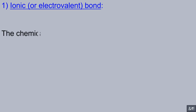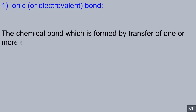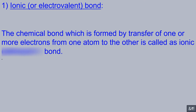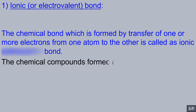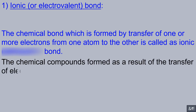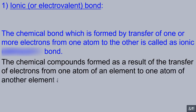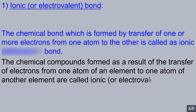The chemical bond which is formed by transfer of one or more electrons from one atom to the other is called an ionic bond. The chemical compounds formed as a result of the transfer of electrons from one atom of an element to one atom of another element are called ionic compounds.